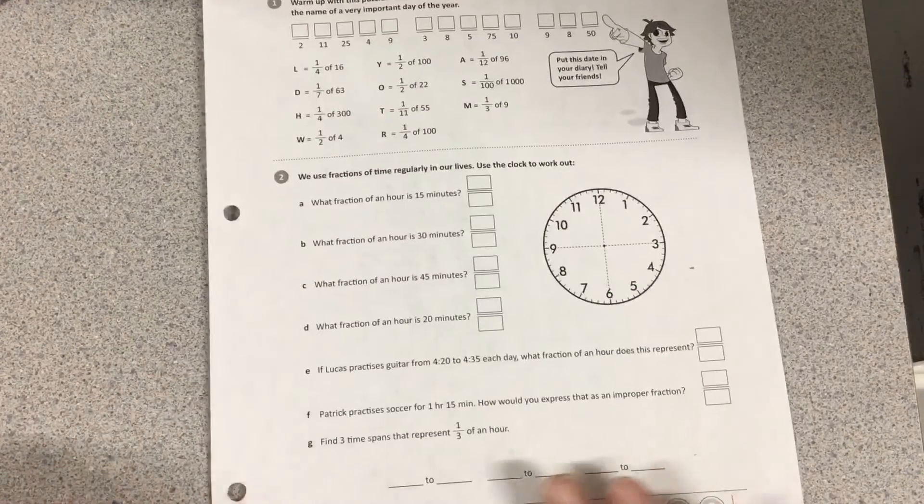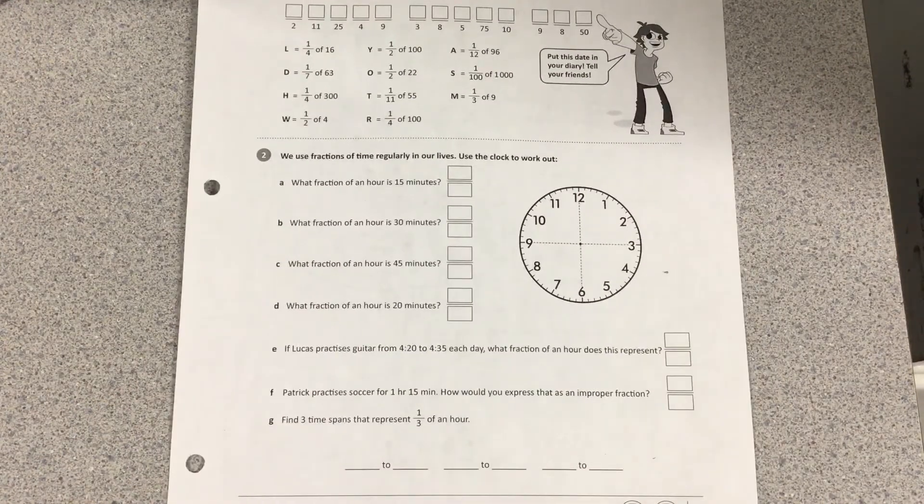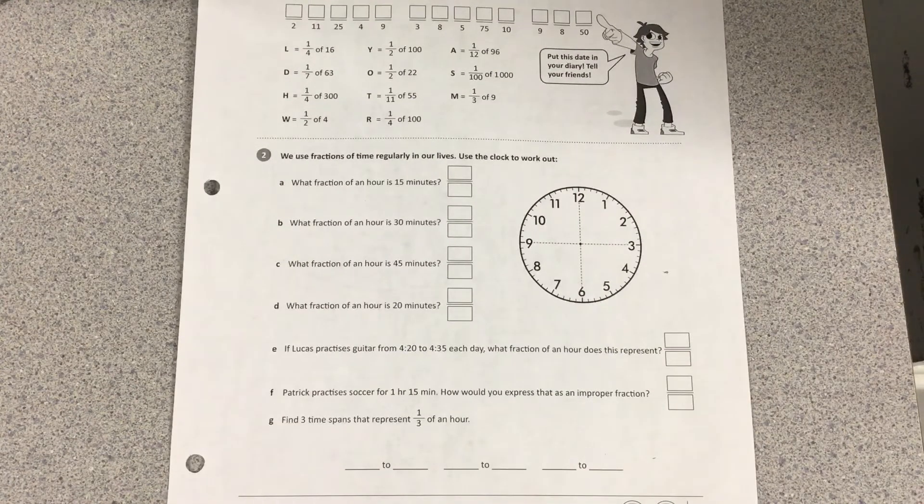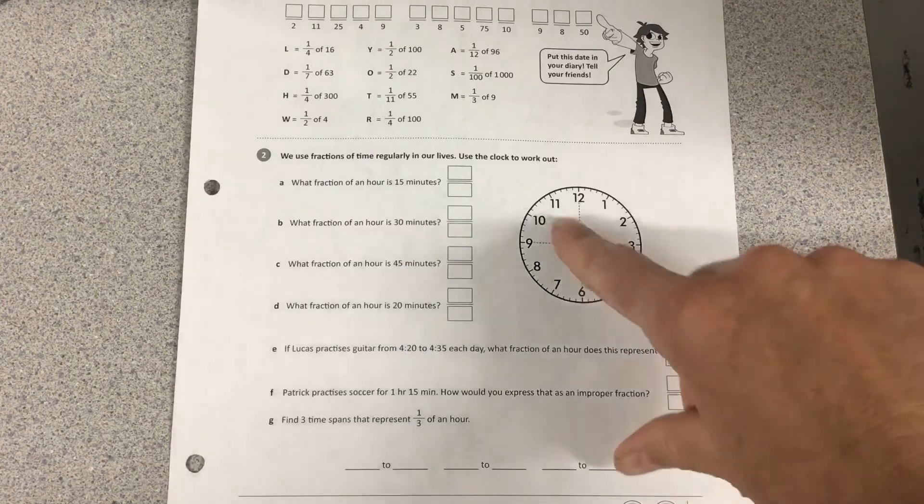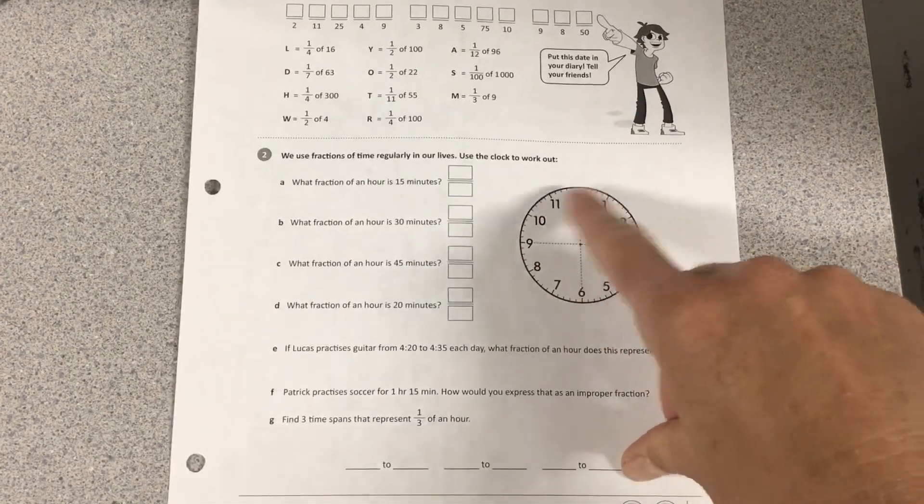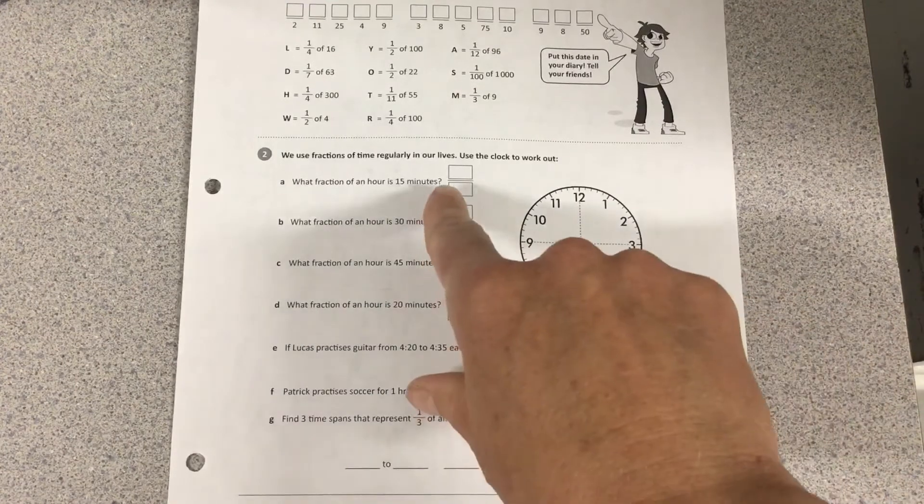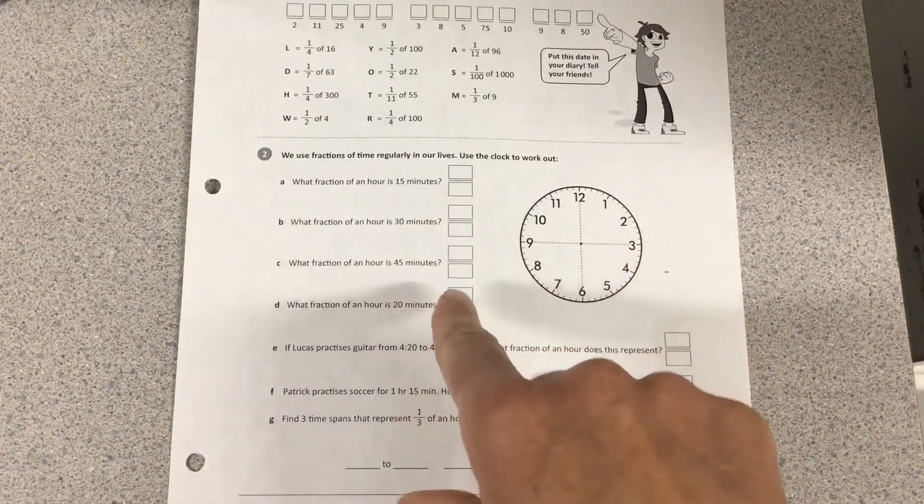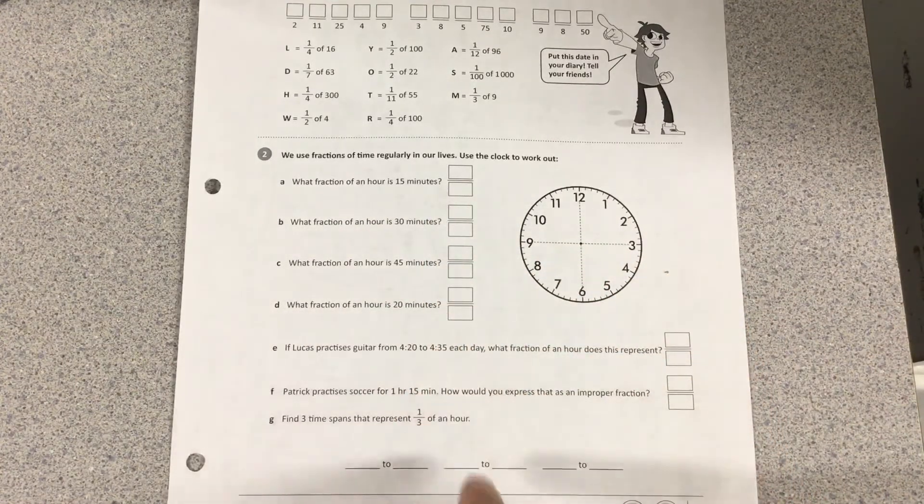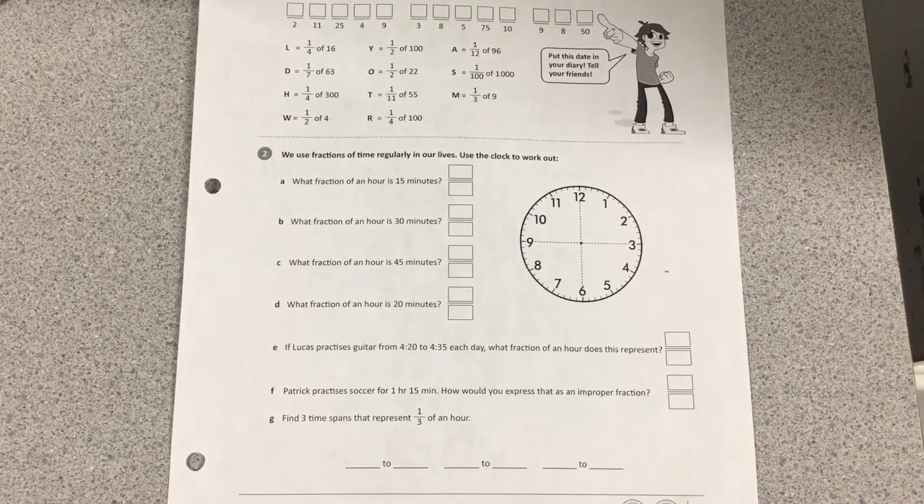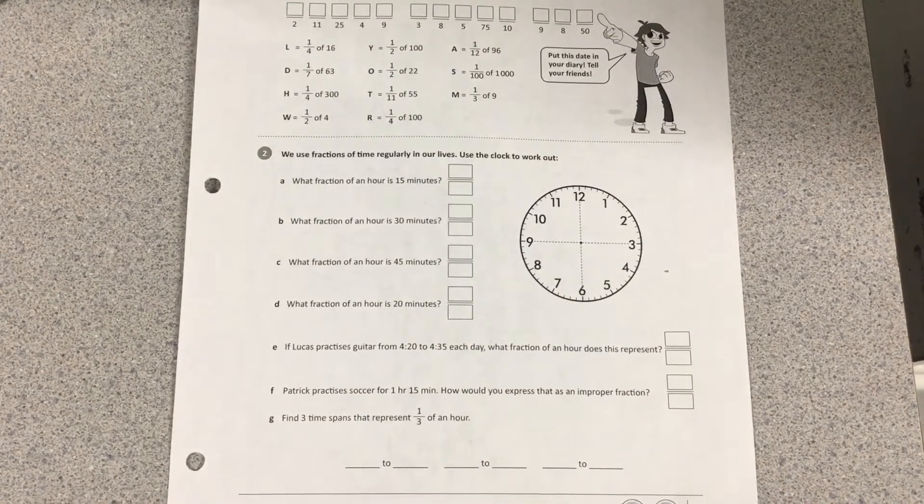Now number two: good thing we did a lot about telling time and elapsed time back in December. This shouldn't be very hard for you. You just need to use this clock - it's already been split into fourths or quarters - and then answer these questions as you go through. So now you're seeing that time is quite related to fractions, or it can be related to a decimal number.